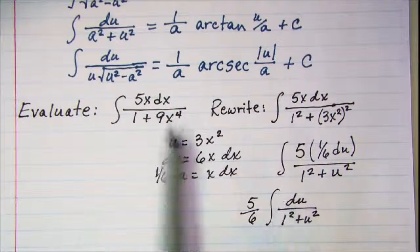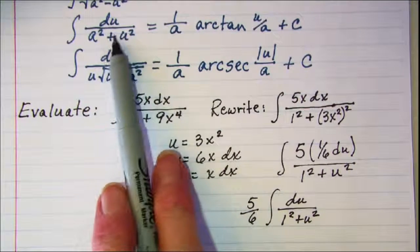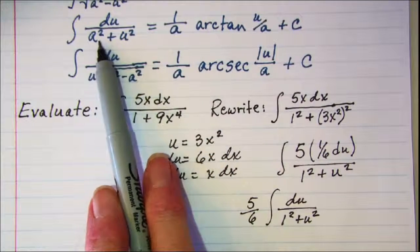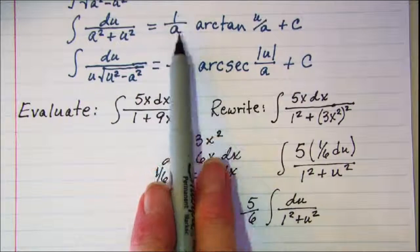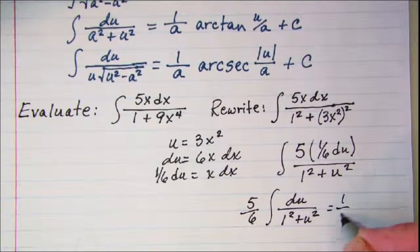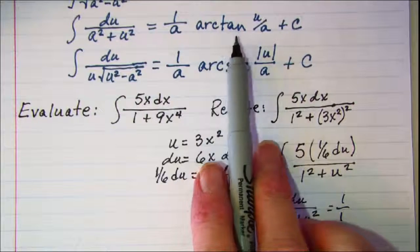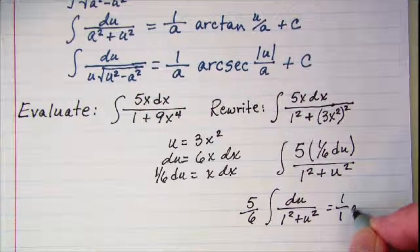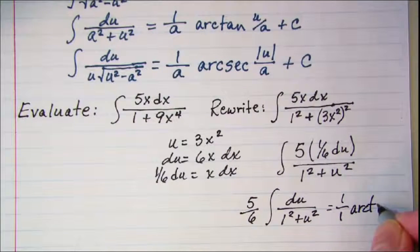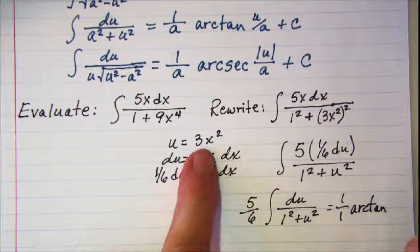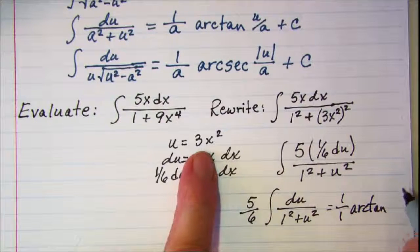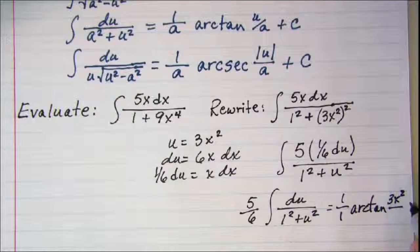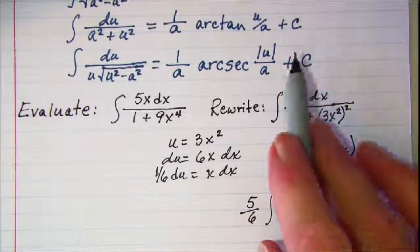Now according to the formula then, this integral is equal to 1 over a, so in my problem a was 1, so I have 1 over 1, and then arctangent of u over a, so arctan, and my u is 3x squared over a, which was 1, plus a constant.